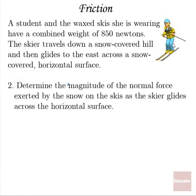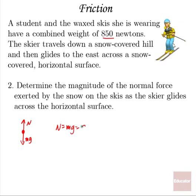Number two: a student and the waxed skis she is wearing have a combined weight of 850 newtons. The skier travels down a snow-covered hill and then glides to the east across a snow-covered horizontal surface. To determine the magnitude of the normal force exerted by the snow on the skis, we have weight down and normal force up. Those must be balanced because the skier isn't accelerating vertically, so the normal force equals the weight: 850 newtons.